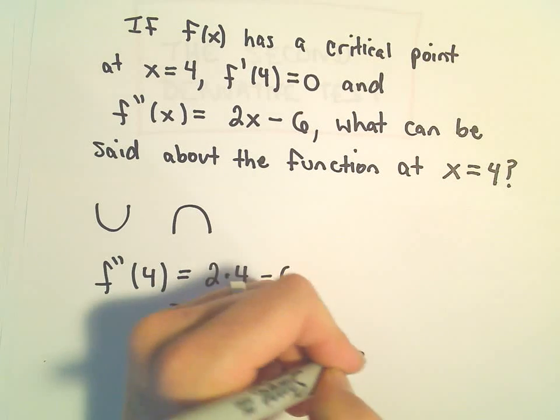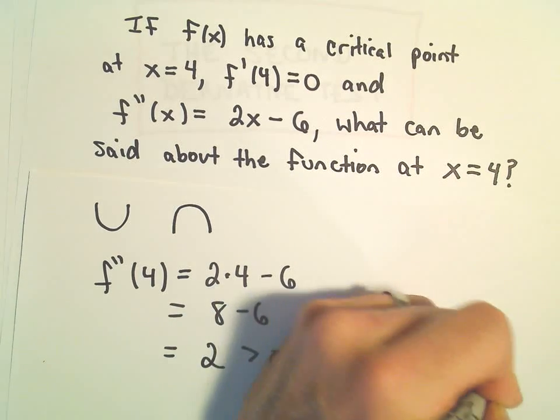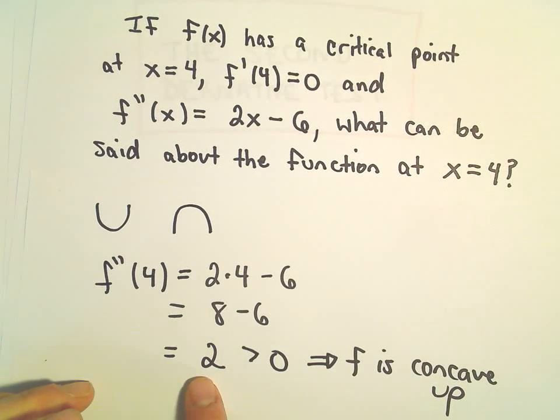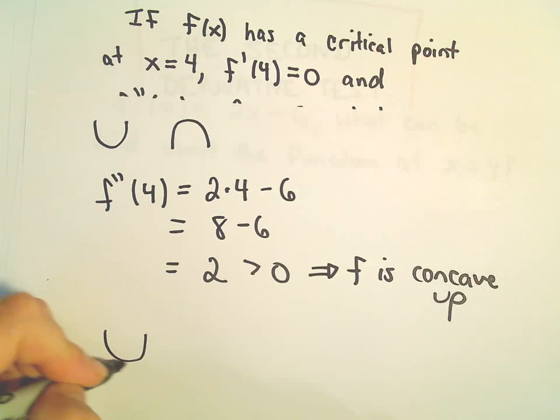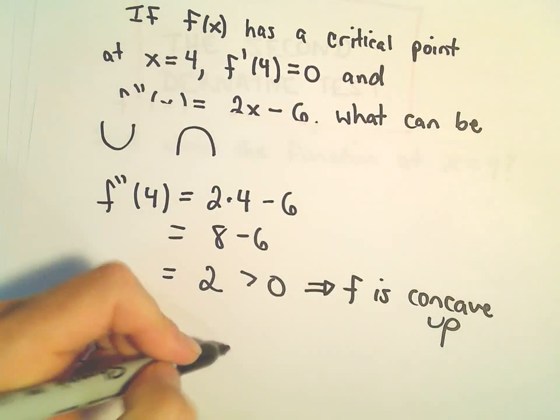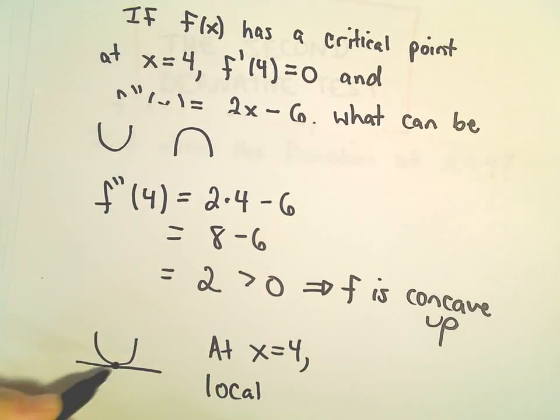And what that would tell us is that f is concave up since the second derivative is positive. And again, since it's concave up and we've got this critical point, that's going to tell us at x equals 4, there would be a local minimum.